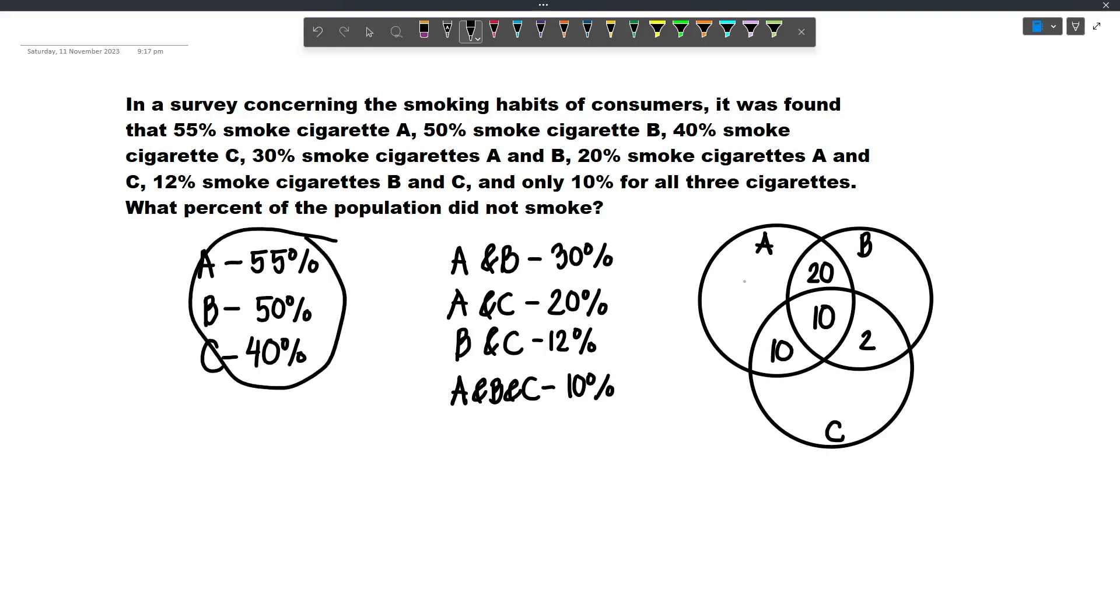And then lastly, let's account for these. 55% of the population smokes A. However, we need to subtract all of these because this percentage smokes all 3, and this percentage smokes A and B only, and then this percentage smokes A and C only. And so 55 minus 20 minus 10 minus 10 will become 15. And so this will be 15.